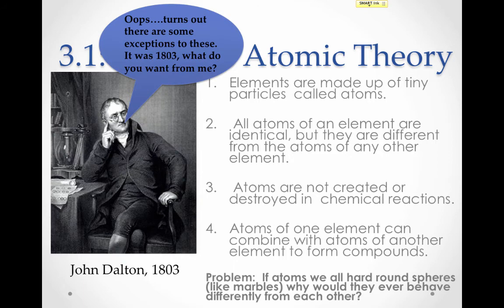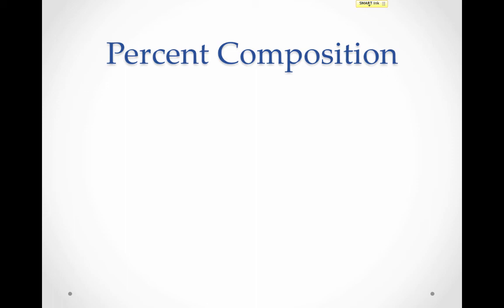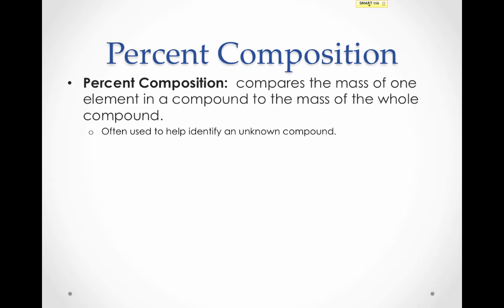This brings us to the last objective for this video. Since we've already established that elements always combine in the same ratios to form compounds, and that compounds always have the same proportion by mass of different elements, we can calculate the percent composition of a compound. The percent composition compares the mass of one element of a compound to the mass of the whole compound. Just like any percentage is the part divided by the whole, here we're dividing the mass of one element to the mass of the whole compound. This is often used to identify an unknown compound.